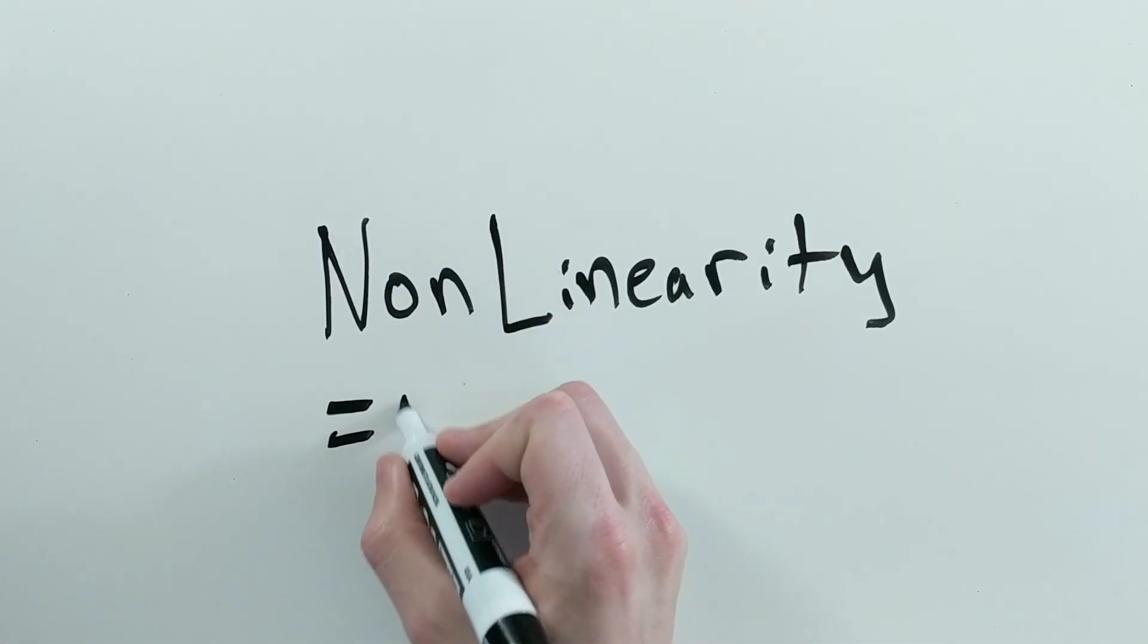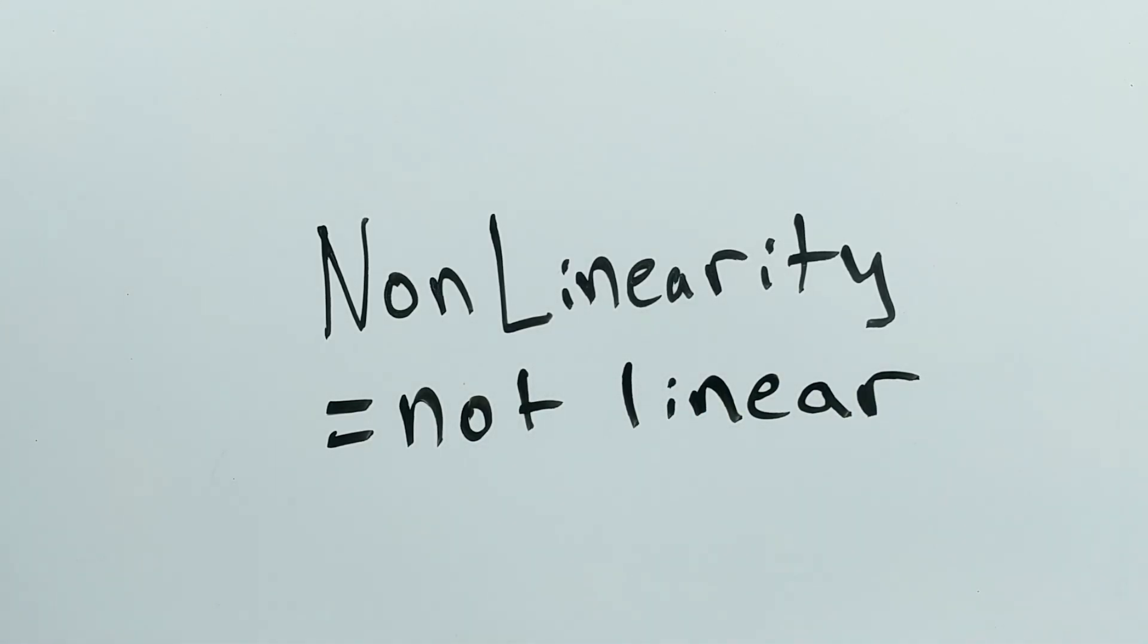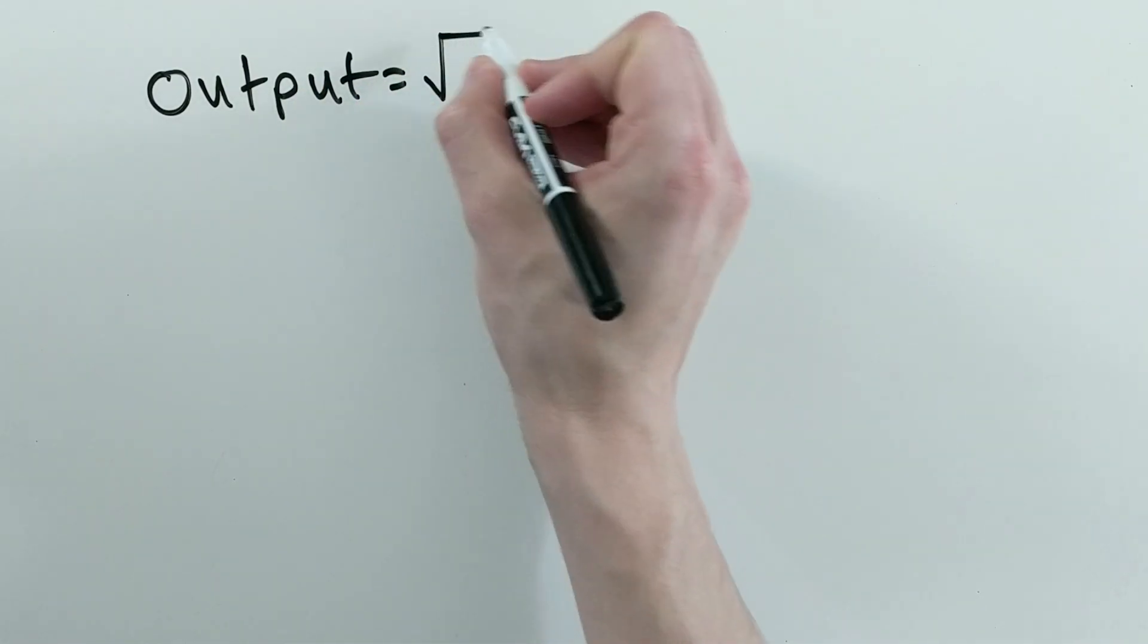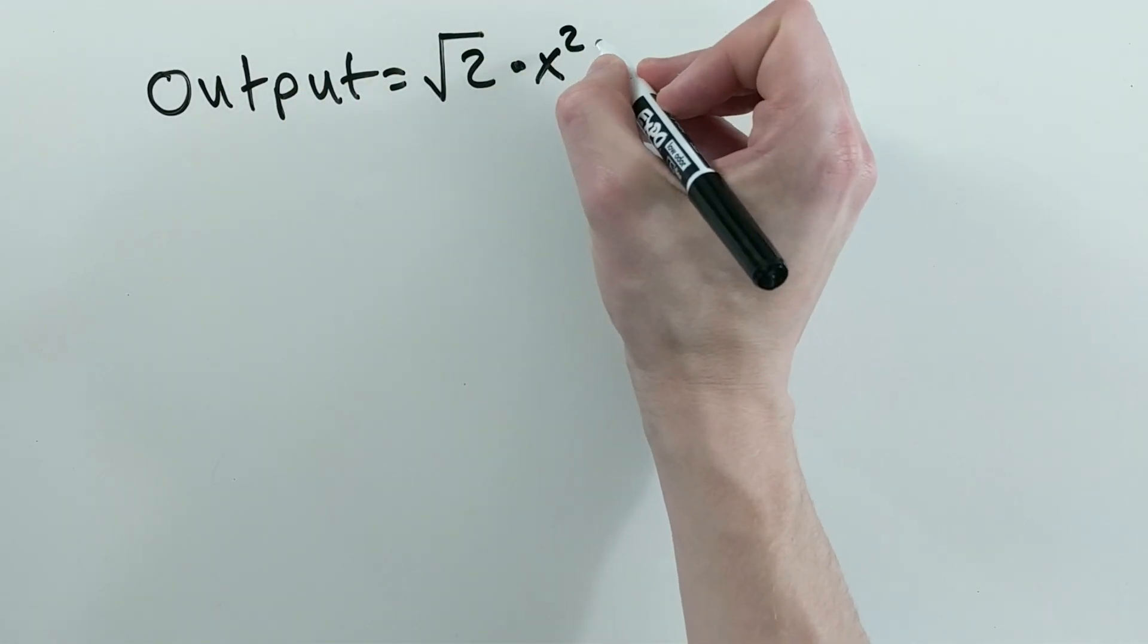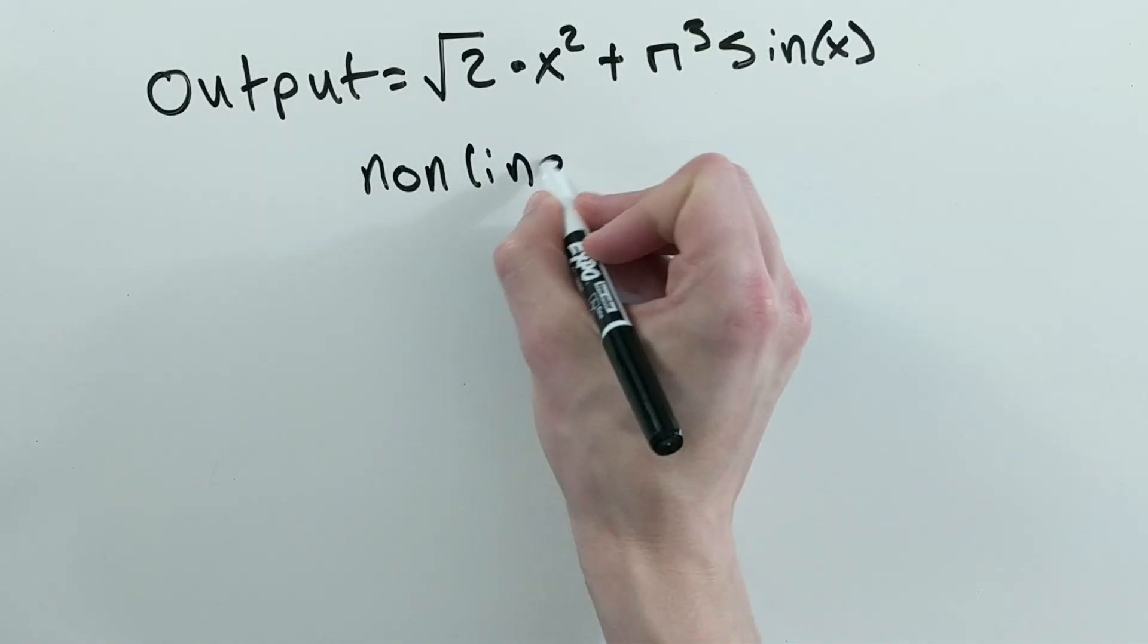While non-linear does mean not linear, there are a couple small catches that aren't obvious right away. For example, if the output function of a network could be described by the square root of 2 times x squared plus pi cubed sine x, you might think that the function is doing a non-linear transformation.